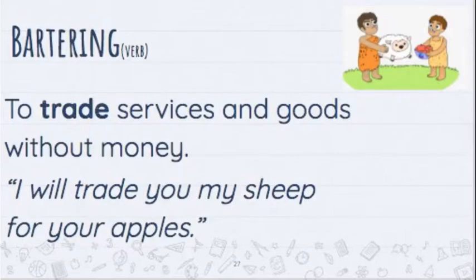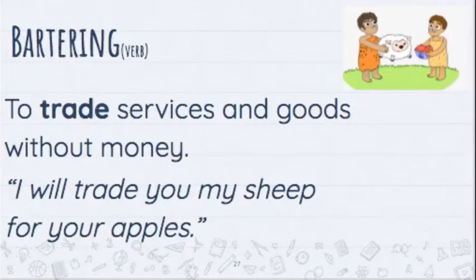Point to the first word. The definition is: to trade services and goods without money. For example, 'I will trade you my sheep for your apples.' Look at that picture — what do you see happening? If you said the man is trading a sheep to get some apples, you are correct. He is bartering — he's not using money, he's using something he already has and trading it for something he wants. Before money was created, people used to barter to get the things that they needed, so you had to have something important or valuable for somebody else to want it.